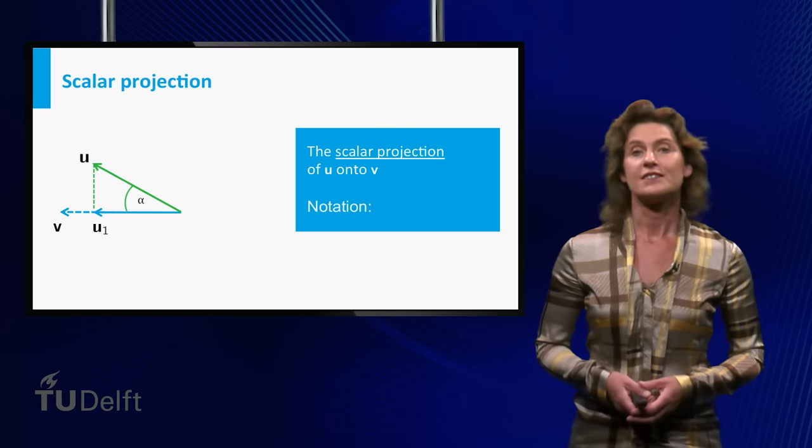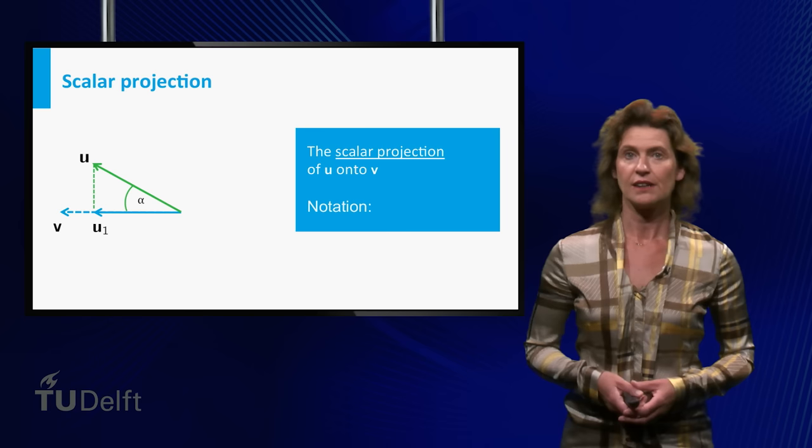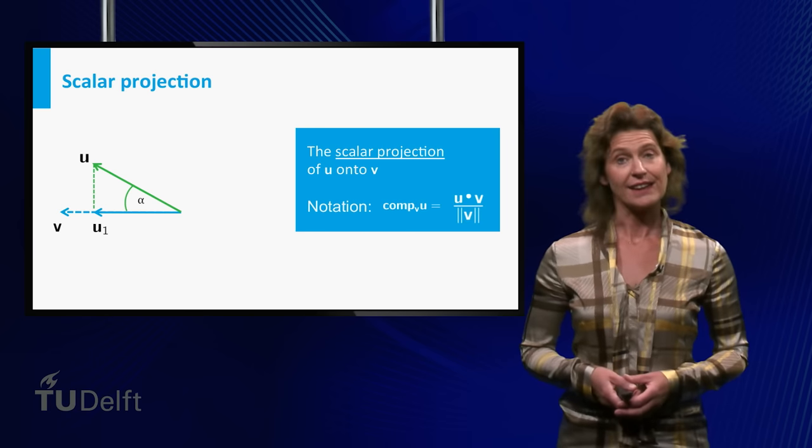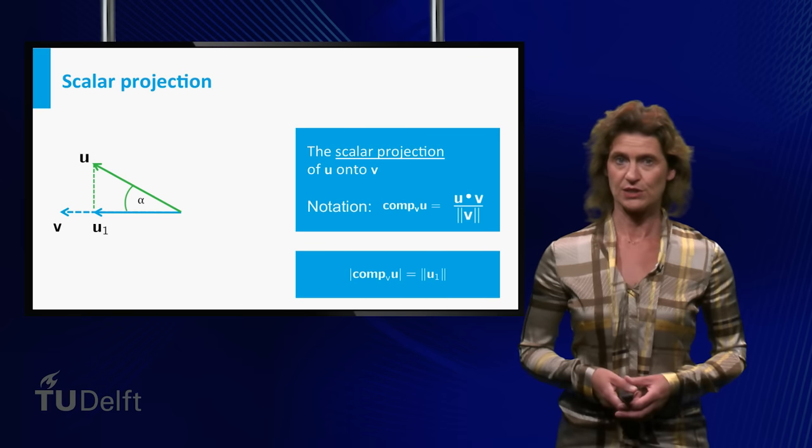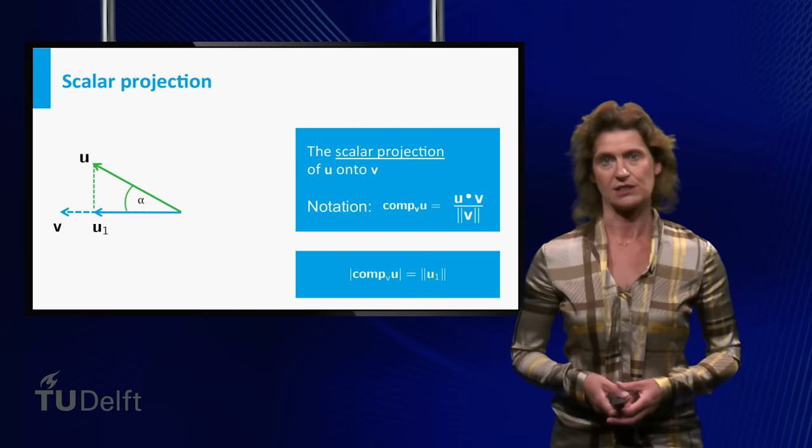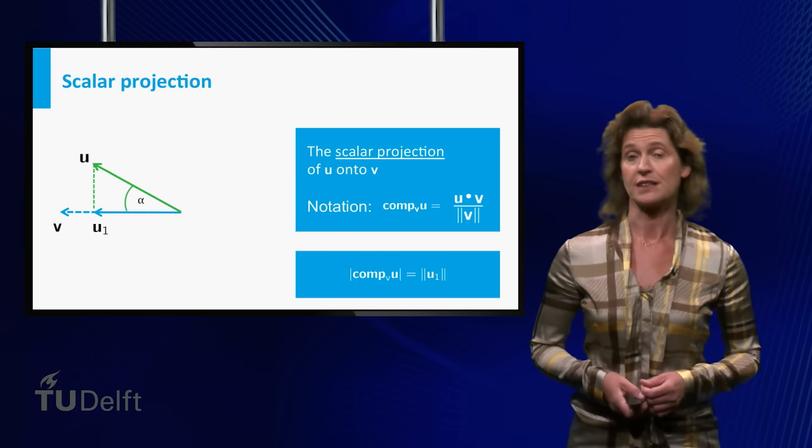The signed magnitude of the orthogonal projection of u onto v is called the scalar projection of u onto v. In fact, the absolute value of the scalar projection of u onto v is equal to the length of the orthogonal projection. The proof of this statement is left to you as one of the exercises.